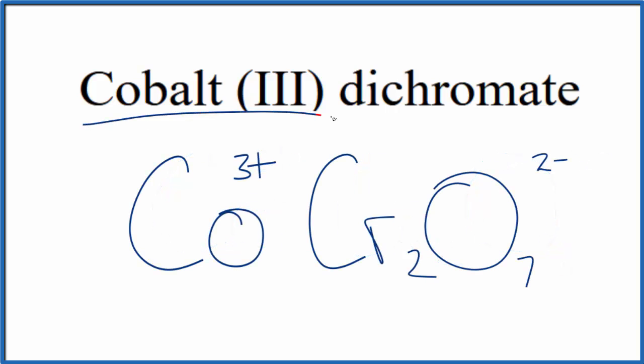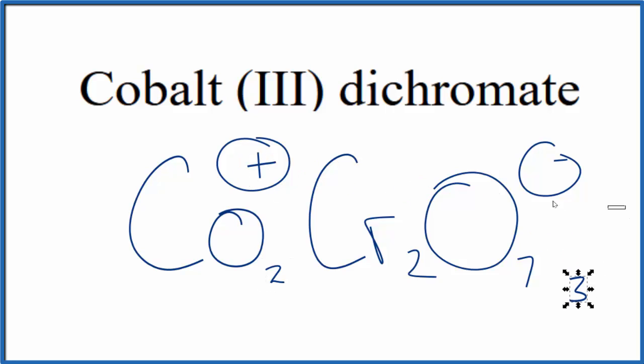Since cobalt is a transition metal, and then we have this polyatomic ion, these charges need to add up to zero. We need a net charge of zero. To do that, we can use something called the crisscross method. We move the 2 down here, the 3 over here. We get rid of these symbols.